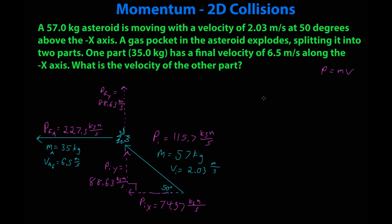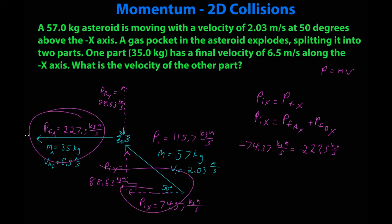So, the question here becomes what about the x-axis? Well, I'll go back to my statement. Momentum initial x equals momentum final x. Momentum initial x, there's only one of them. However, momentum final x is going to be momentum final x plus momentum final x. That is going to be negative 74.37 kgm/s equals negative 227.5 kgm/s. They are both negative because these vectors are to the left, plus momentum final b on the x. The momentum final b on the x-axis to be 153.1 kgm/s, which means the second part of the asteroid split upward and to the right.